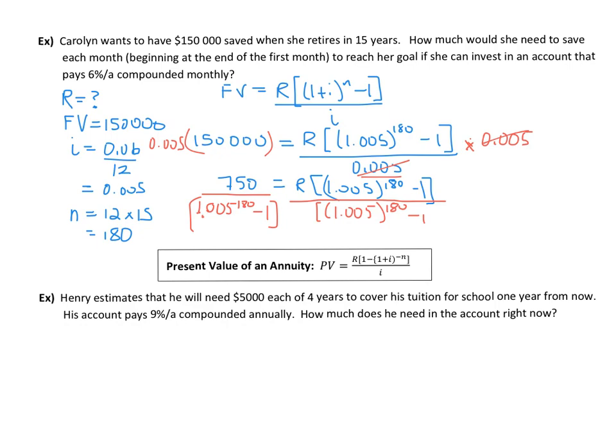Bracket equals. So I get $515.79 is what that's going to round to. So that's the regular payment amount. She needs to make monthly payments of $515.79 to be able to meet her goal.